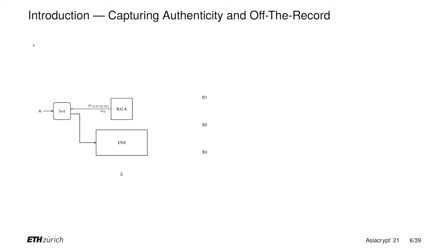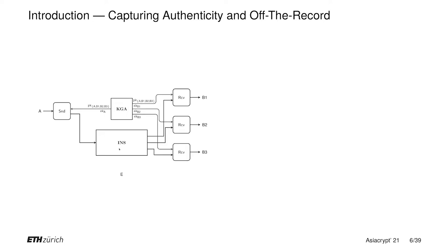This converter gets the public keys of all parties — Alice, Bob1, Bob2, and Bob3 — and also gets the secret key of Alice for sending messages. Whenever Alice inputs some message M into this send converter, the send converter uses its public keys and secret key of Alice to generate a signature on this message, which it then writes together with the message into this insecure channel. Each of these Bobs runs a receive converter, and these receive converters all get the public keys of every party. In addition, each receive converter gets the secret key of the corresponding Bob. Finally, Eve, who is a dishonest party, can interact with the insecure channel and only has access to the public keys of all parties.